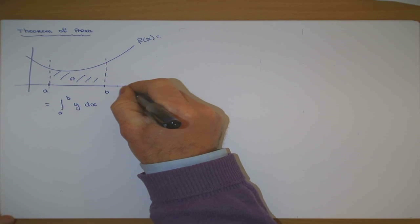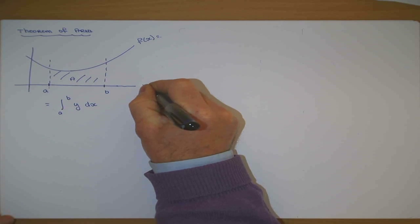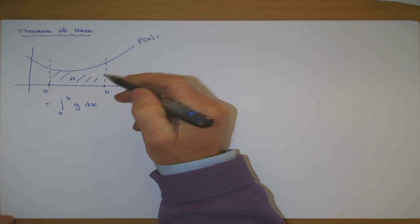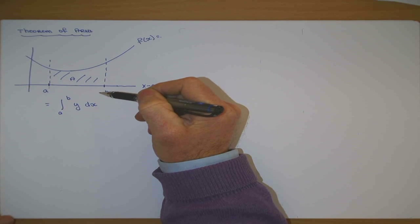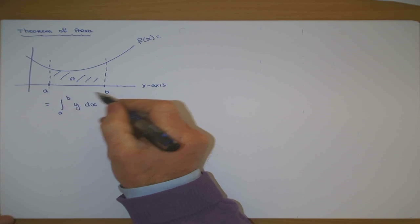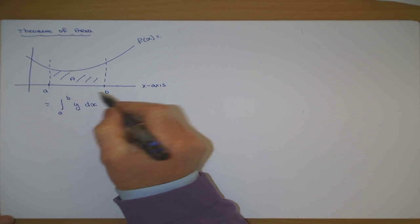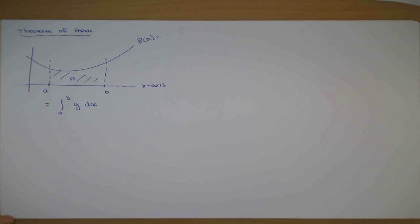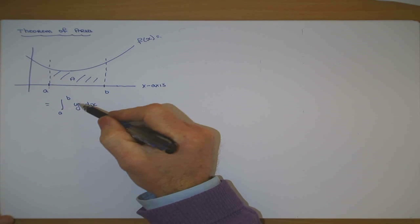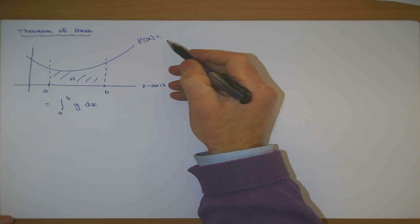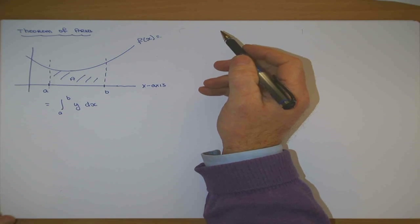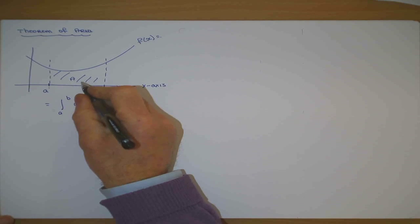Here we are getting the area to the x-axis. If we are getting the area to the x-axis, it's the integral from a to b. a and b both have to be x-values. And y has to be a function in x — so y will be, say, x squared minus 2x. And that integral gives you that area.